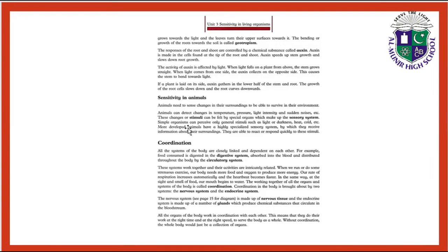Simple organisms can perceive only general stimuli such as light or darkness, heat or cold. More developed animals have a highly specialized sensory system by which they receive information about their surroundings.